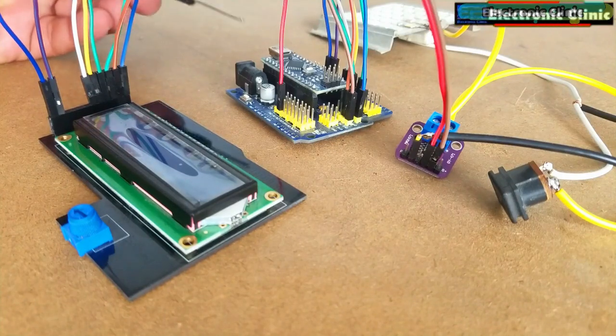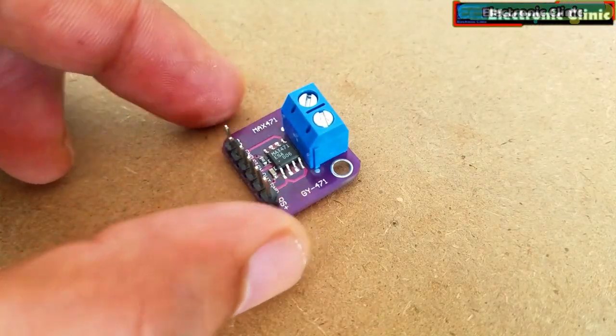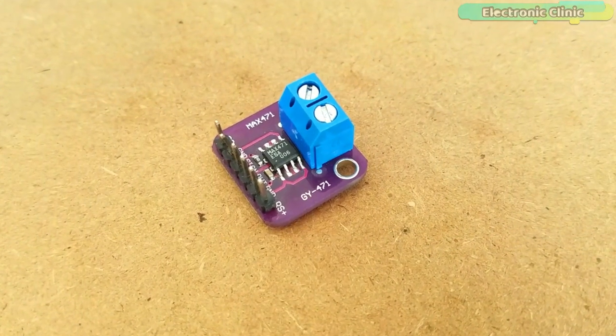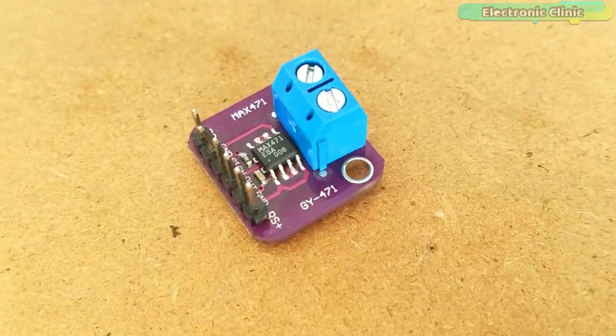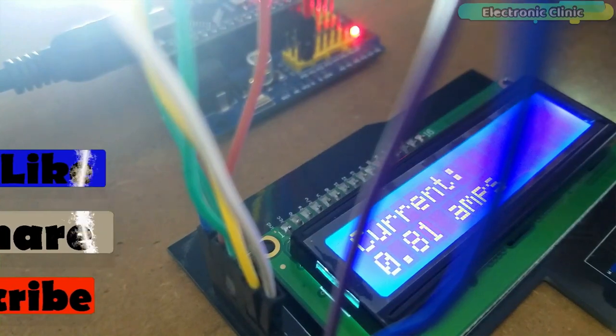In today's episode you will learn how to use the MAX471 bi-directional high-side current sense amplifier with Arduino for measuring the DC current.